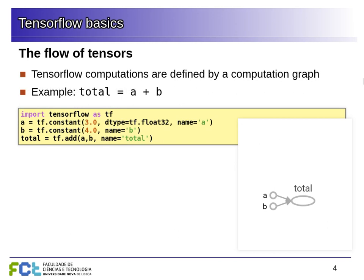Let's see a simple example of how to add two things in TensorFlow. We import TensorFlow as TF — the usual nickname, like NP for NumPy. We create two constants: A is a TensorFlow constant with value 3, and B is a TensorFlow constant with value 4. You can specify the type or it will be inferred automatically. Then we create an operation for adding the two, and we can give it a name — this is the computation graph with these two values and an operation called 'total'.